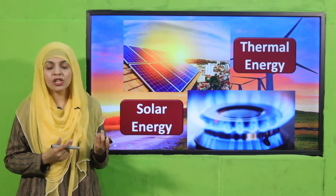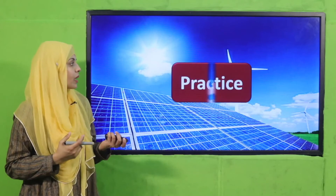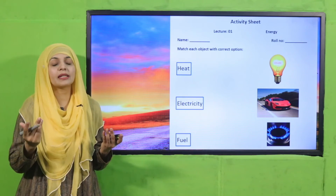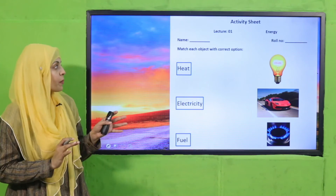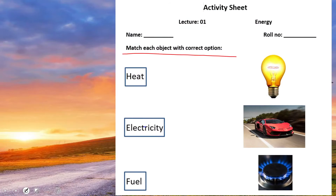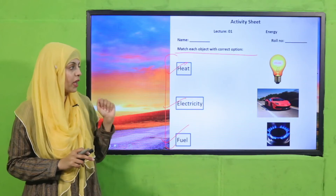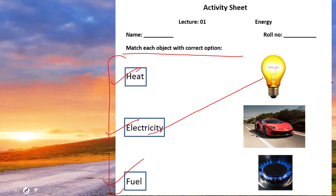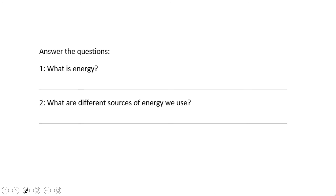There is also thermal energy and heat energy. Now it is time for practice. You can download this worksheet from the description box below this video, or you can get it in print form from your teacher. Write down your name and class, then match each object with the correct option. Here are some forms of energy: heat, electricity, and fuel. For lighting a bulb, electricity is required as energy. You will complete the rest of the worksheet.